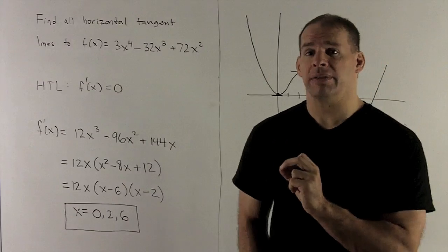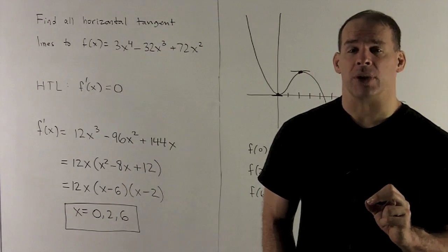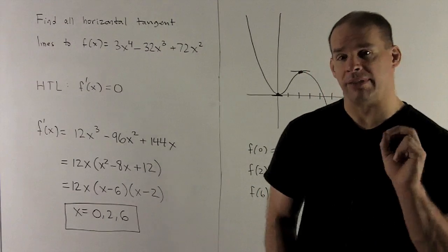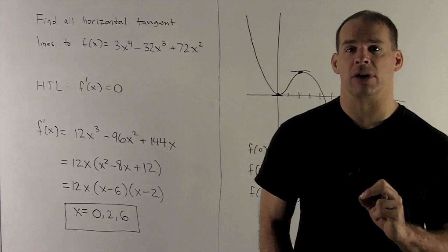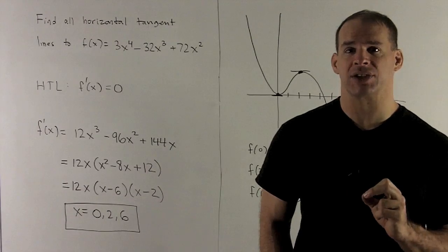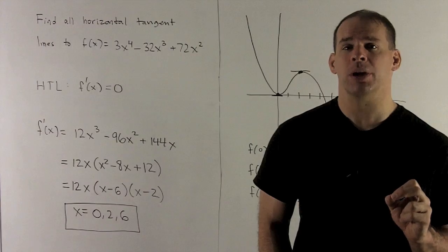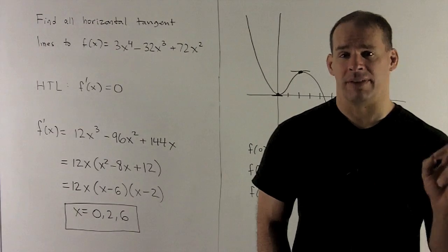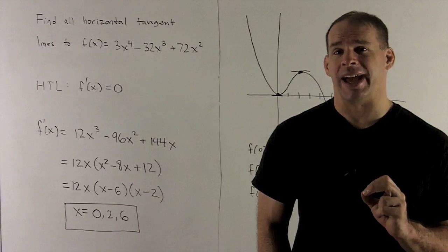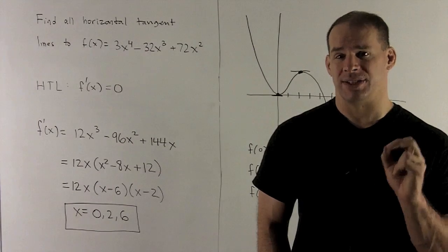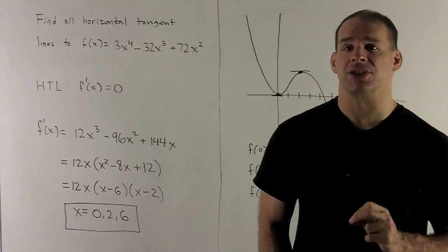Now we have our derivative, so let's factor that. So I can pull out 12x, and then what's going to be left over is x squared minus 8x plus 12. That we can factor into x minus 2, x minus 6, then we have an x in front, so our zeros are going to occur exactly at 0, 2, and 6. So that's our answer.